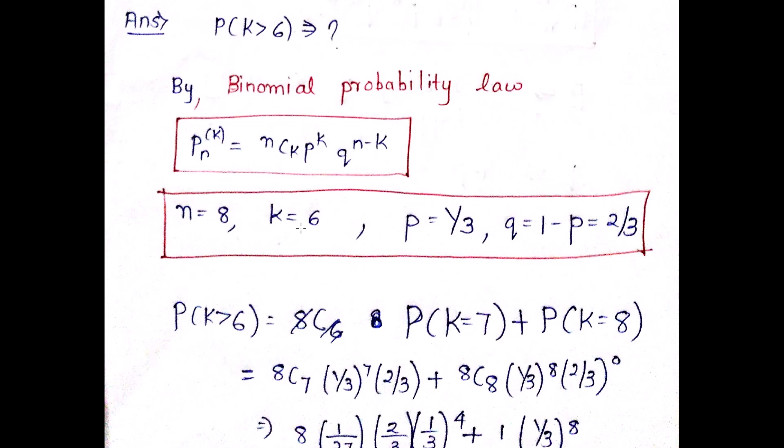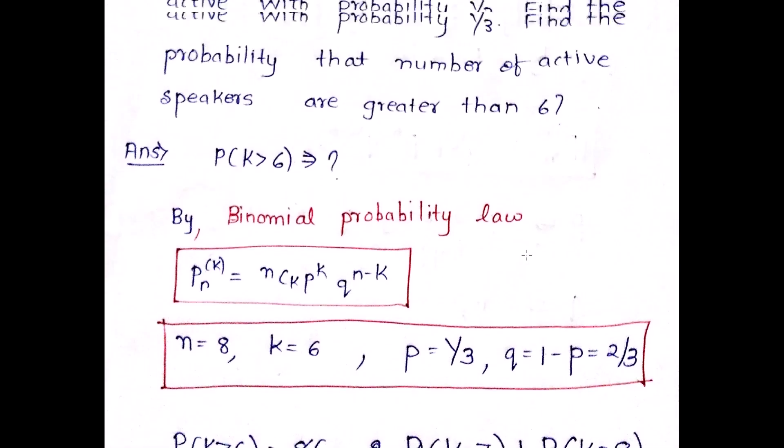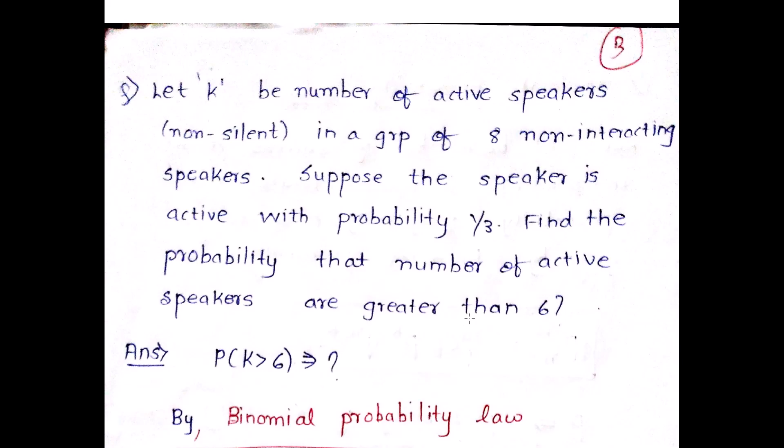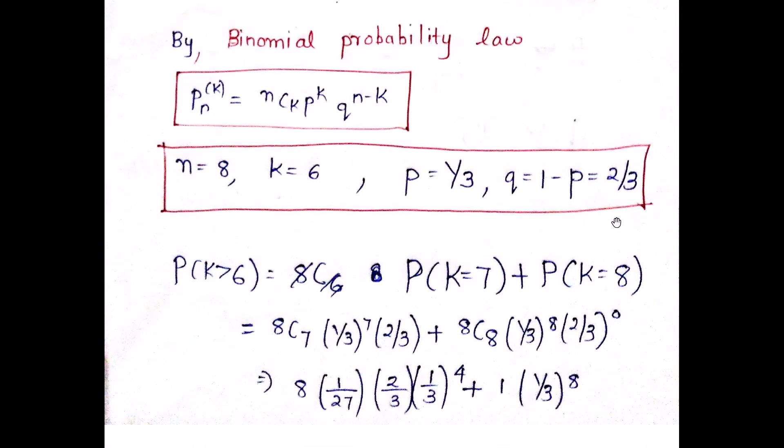So n stands for the total number of speakers, that is 8. We will be understanding better now. p is given as 1/3 in the probability, and q is 1 minus p, that is 2/3.